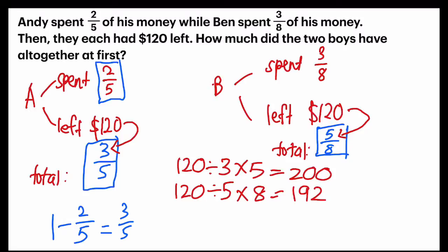Then, the question wants, how much did the two boys have altogether at first? So my last step is adding the two, 192 and 200 together, and I will get $392. And that's my final answer.